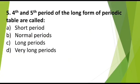MCQ 5. 4th and 5th period of the long form of periodic table was called: a) Short period, b) Normal periods, c) Long period, d) Very long period. Correct answer is long period.